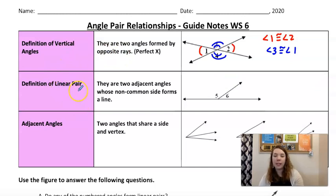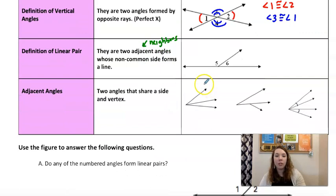A linear pair are any two adjacent angles. Adjacent means they're neighbors. And that forms a line. So their side in common is this ray, but their non-common side forms a straight line, 180 degrees. Adjacent angles are angles that share a side and vertex, or they're neighbors.